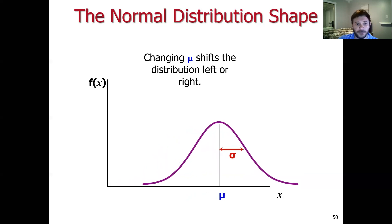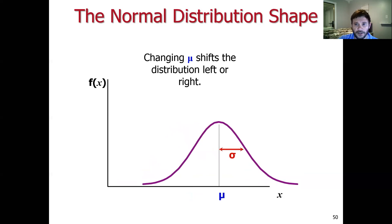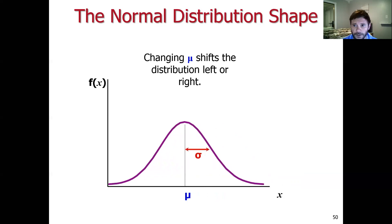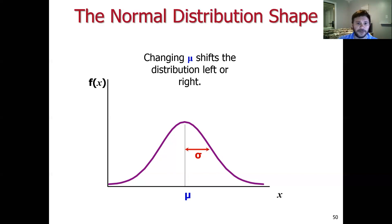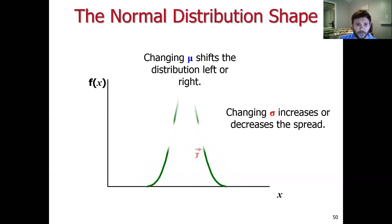Increasing mu shifts the distribution to the right; decreasing mu shifts it back to the left. If we were to change sigma by increasing it, that's going to increase the spread — pulling the tails out farther, meaning we have more variability in the random variable's outcome. But if sigma gets smaller, we do the opposite: we decrease the spread and get a more tightly fitting probability density function with everything much closer to the center.